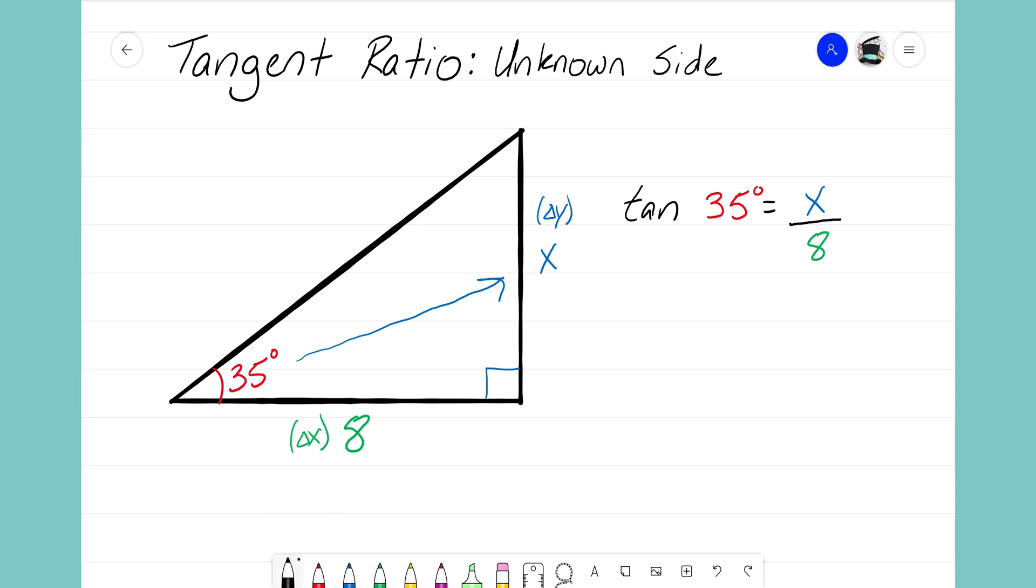I'm going to go ahead and put tangent of 35 degrees over 1. I'm going to turn that into a fraction because now I have a fraction equal to a fraction, and at this step all I can do now is cross multiply.